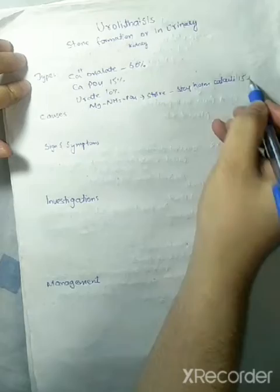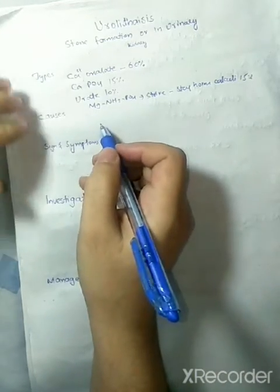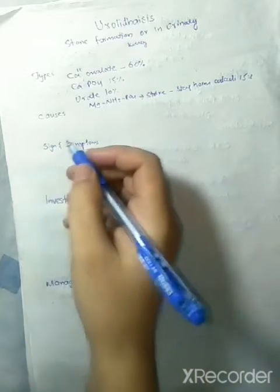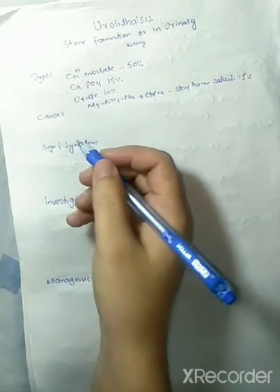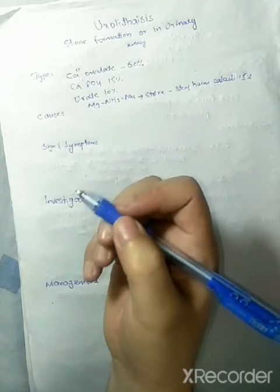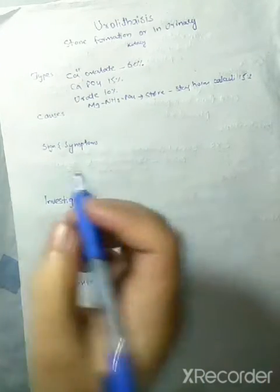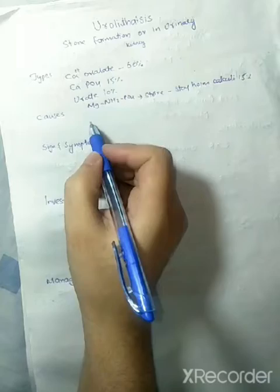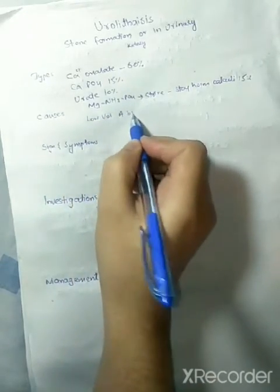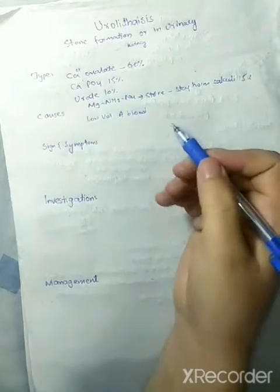So what are the causes of urolithiasis? There are mainly two causes: environmental and dietary causes, and acquired causes. Environmental causes include low volume of blood which causes more concentration of fluid in the tract.